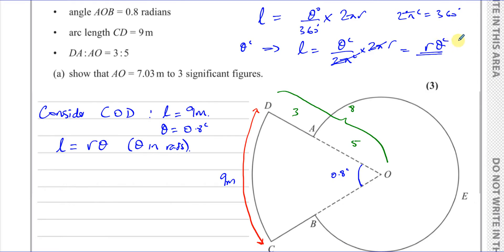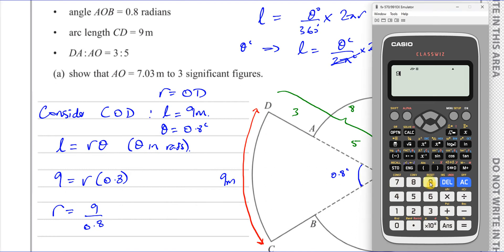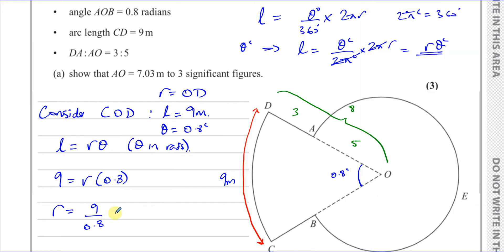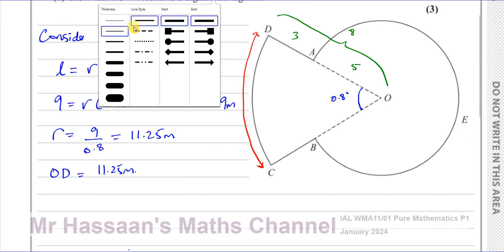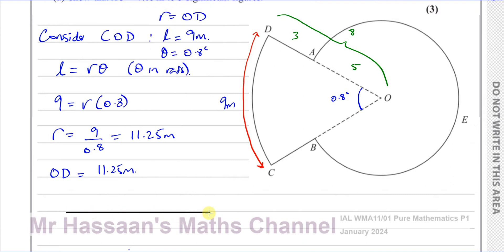Applying the formula: L = 9, θ = 0.8, and r here is OD — the radius of the large sector. So 9 = OD × 0.8, which gives OD = 9 ÷ 0.8 = 45/4 = 11.25 metres. That's not our final answer; it helps us find AO.